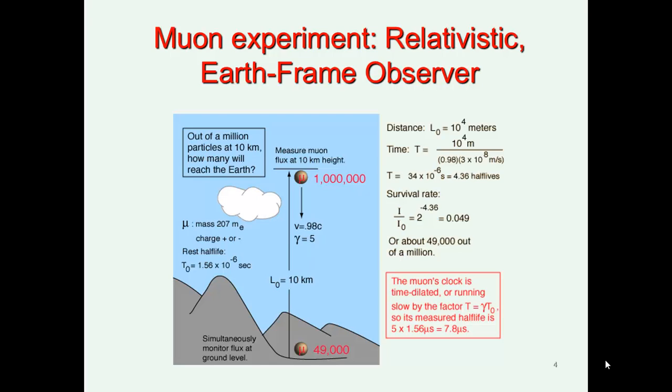So this is the relativistic Earth frame observer viewpoint. So that means if that's the case, then the time it takes to reach planet Earth actually only takes up 4.36 half-lives. And that means my survival rate is 2 to the power of minus 4.36. And that means I get 49,000 out of a million muons created reach the ground. And this is something which is observable and is actually happening.